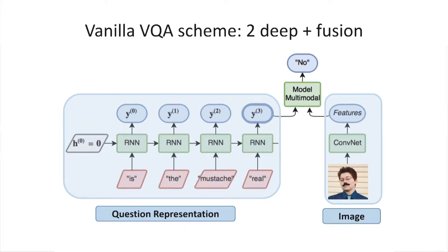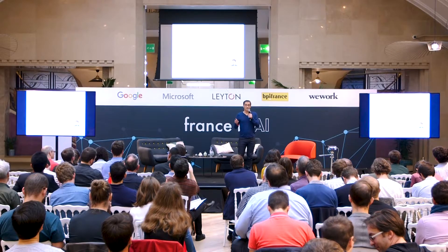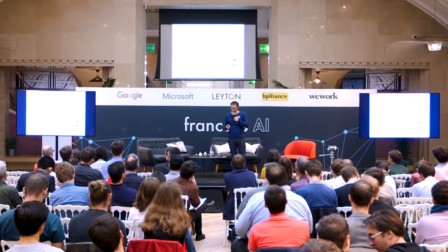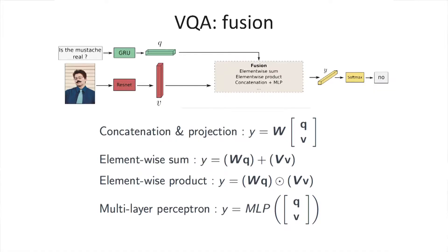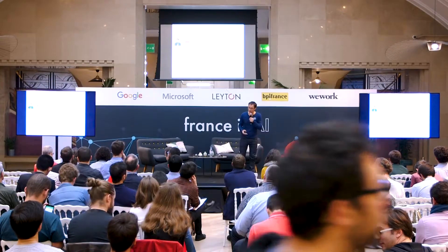The basic approach starts with a question representation using recurrent neural networks, as presented earlier in the conference. On the image side, we model it using a deep convolutional network. From these two representations, we produce features coupled in multimodal modeling and classify to produce the answer.